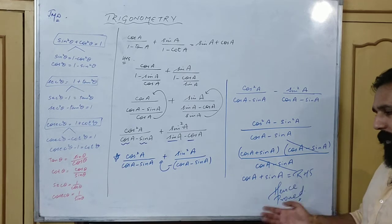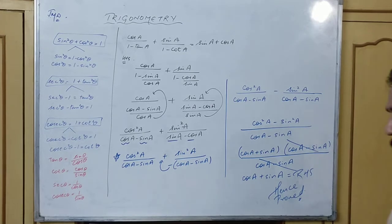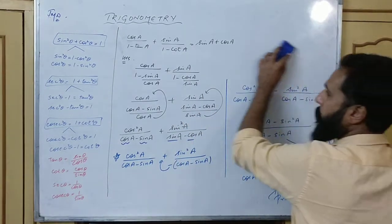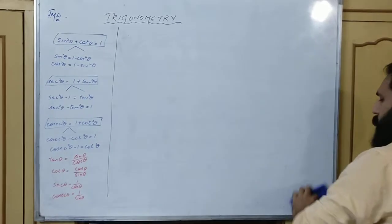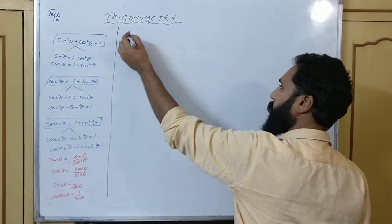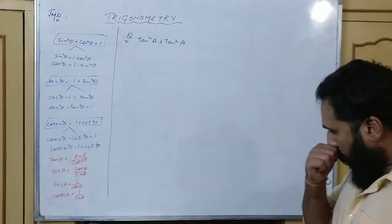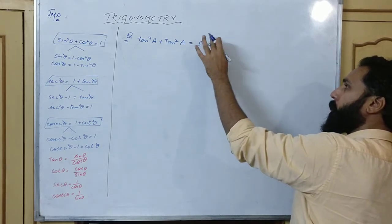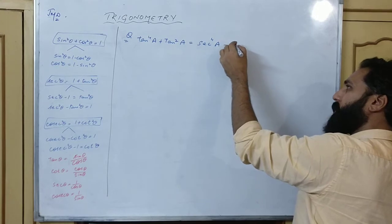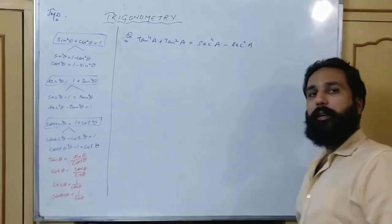So today's trick: the denominator values were the same, only the sign differed, so we took that sign common and used it further. We will do more such questions. Next question: tan to the power 4A plus tan square A is equal to secant to the power 4A minus secant square A.